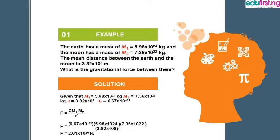Let's look at an example. The earth has a mass M1 of 5.98 times 10 to the power of 24 kilograms, and the moon has a mass M2 of 7.36 times 10 to the power of 22 kilograms. The mean distance between them is 3.28 times 10 to the power of 8 meters. Using F equals GM1M2 over R squared and substituting the given values, the gravitational force F equals 2.01 times 10 to the power of 20 Newtons.